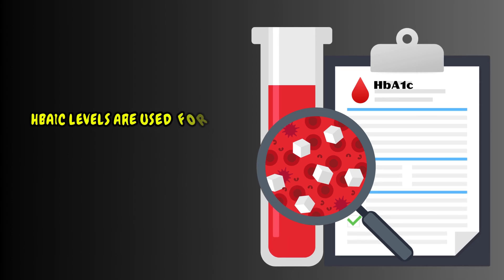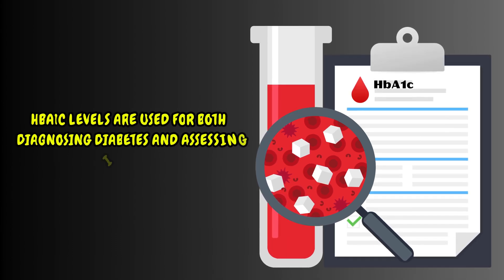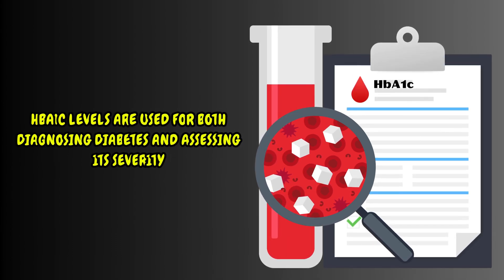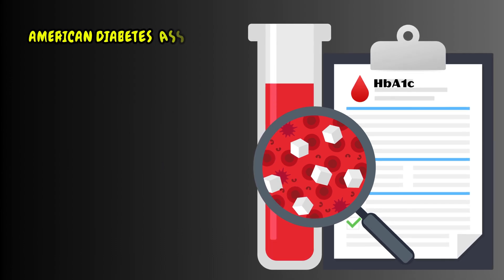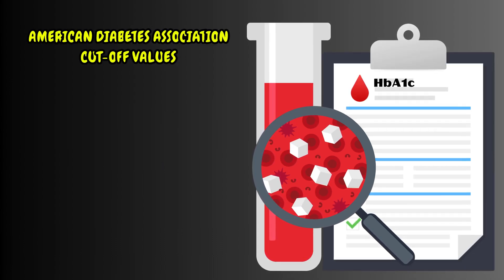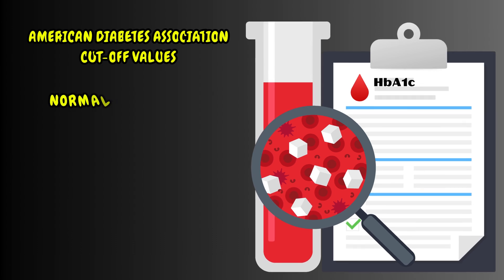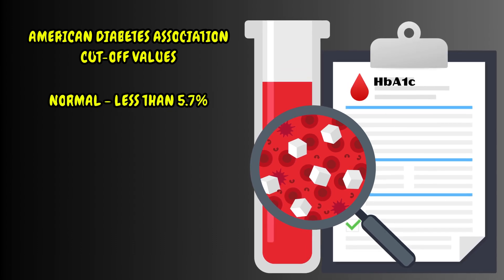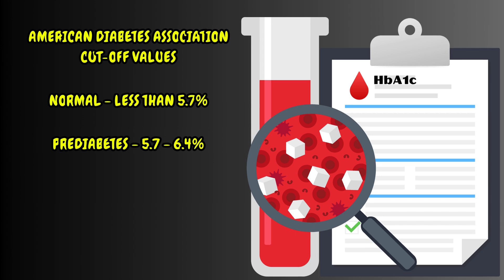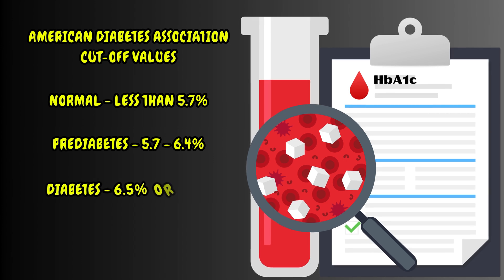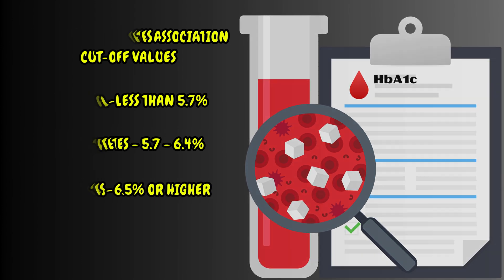HbA1c levels are used for both diagnosing diabetes and assessing its severity. The American Diabetes Association recommends the following cut-off values: Normal is below 5.7%, Prediabetes is between 5.7% to 6.4%, and Diabetes is 6.5% or higher.